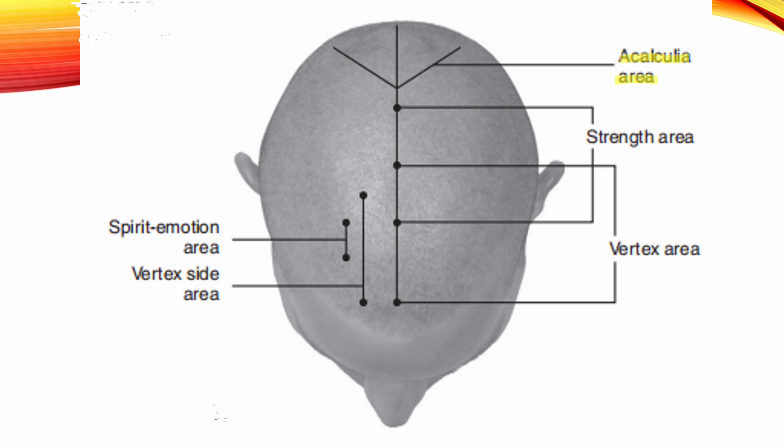Acalculia Area. Location: 3 cm posterior from the upper point of the sensory area, at 60 degrees from the anterior-posterior midline, extending posterior and lateral, 5 cm in length. Indication: Decreased capability of recognizing numbers and words.